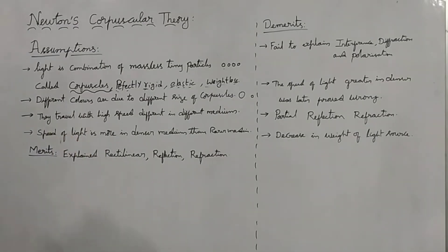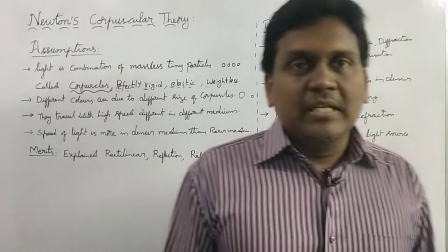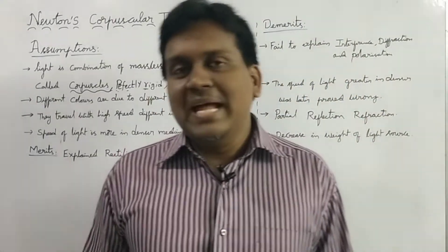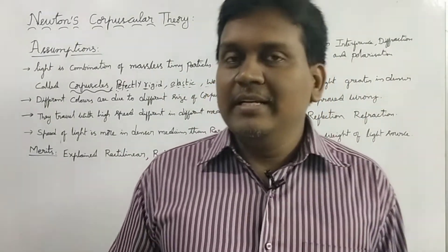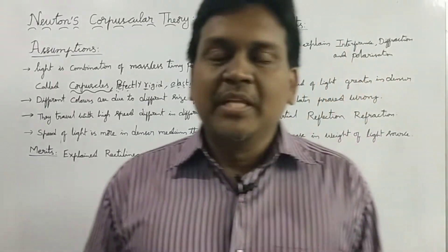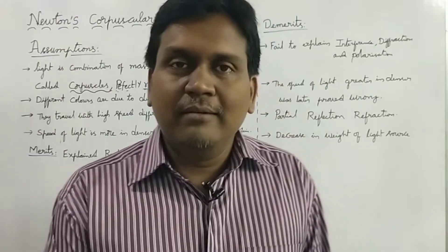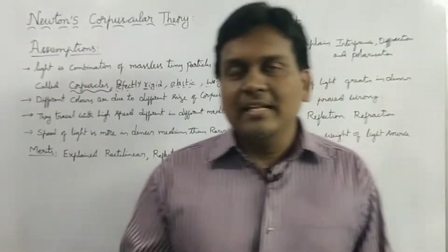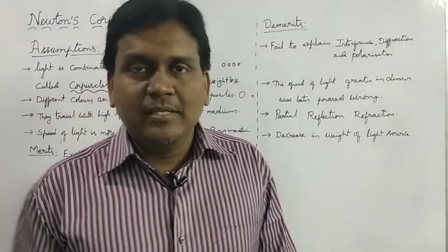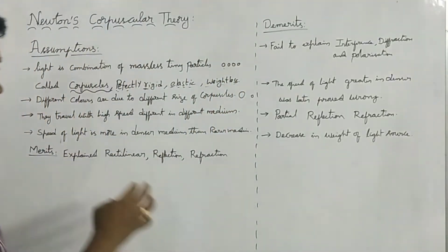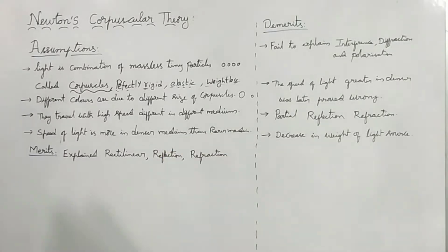Newton assumed that the speed of light is more in denser medium than in rarer medium — the speed of light is maximum in denser medium, and less in rarer medium. We know the property of sound — sound travels faster in denser than in rarer. So maybe with that assumption, he thought the speed of light is also more in denser medium than in rarer medium.